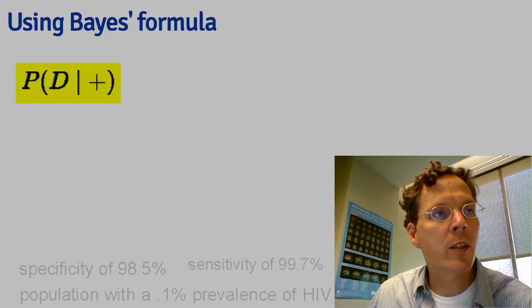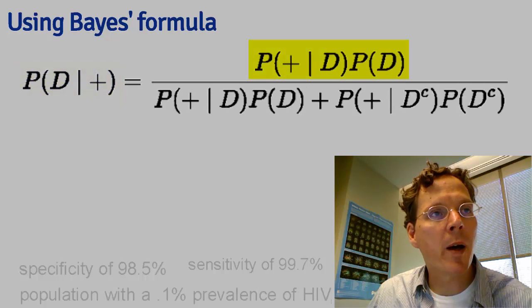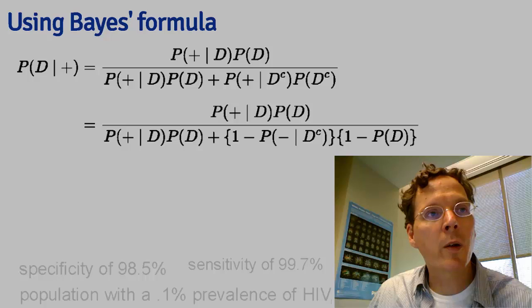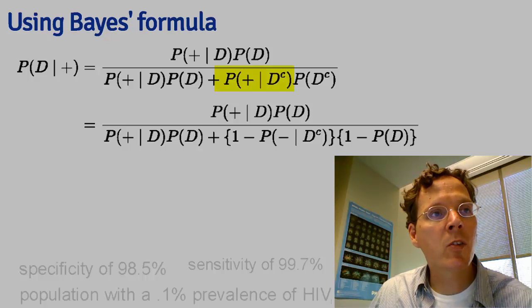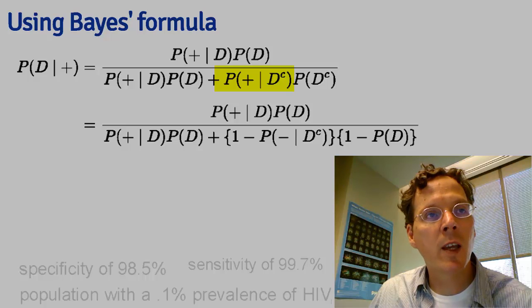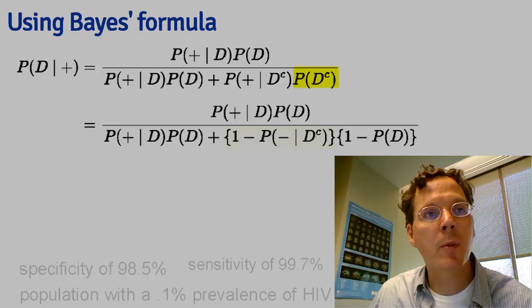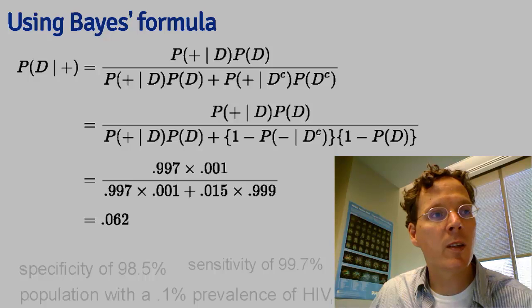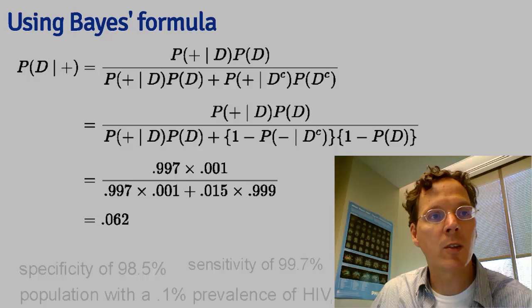We want the probability of disease given a positive test result. That's the probability of the positive test result given disease times the probability of disease, divided by the denominator. The probability of a positive test result given that the person does not have the disease is 1 minus the specificity. The probability of disease complement is 1 minus the probability of disease. Now rewritten only in terms of known quantities, we plug in the numbers and get 6% as our probability. So a positive test result only suggests a 6% probability that the subject has the disease — the positive predictive value is 6% for this test.